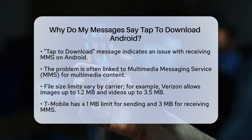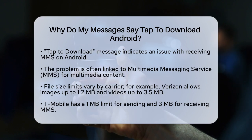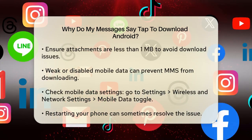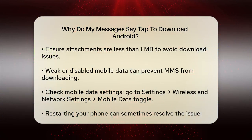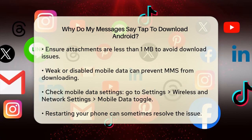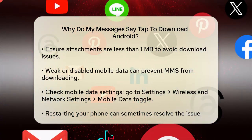Here are some common reasons why you might be seeing this message. When you try to send or receive an MMS message, the size of the attachment can be a problem. Different carriers have different file size limits. For example, Verizon allows images up to 1.2 megabytes and videos up to 3.5 megabytes, while T-Mobile has a 1 megabyte limit for sending and 3 megabytes for receiving. If the file is too large, it won't download automatically and you'll see the tap to download message. To avoid this, make sure your attachments are less than 1 megabyte.